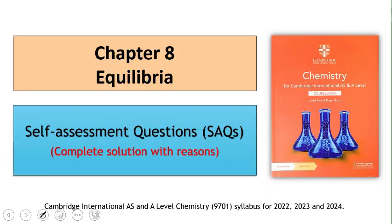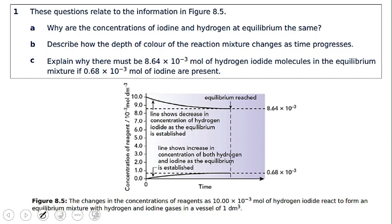Hey guys, we are starting the Cambridge International AS and A Levels Chemistry course book, and in this video we are going to cover self-assessment questions of Chapter 8, Equilibria. Question number one gives some information in figure 8.5, which is a graph showing concentration versus time, with concentration in moles per dm³ on the y-axis.